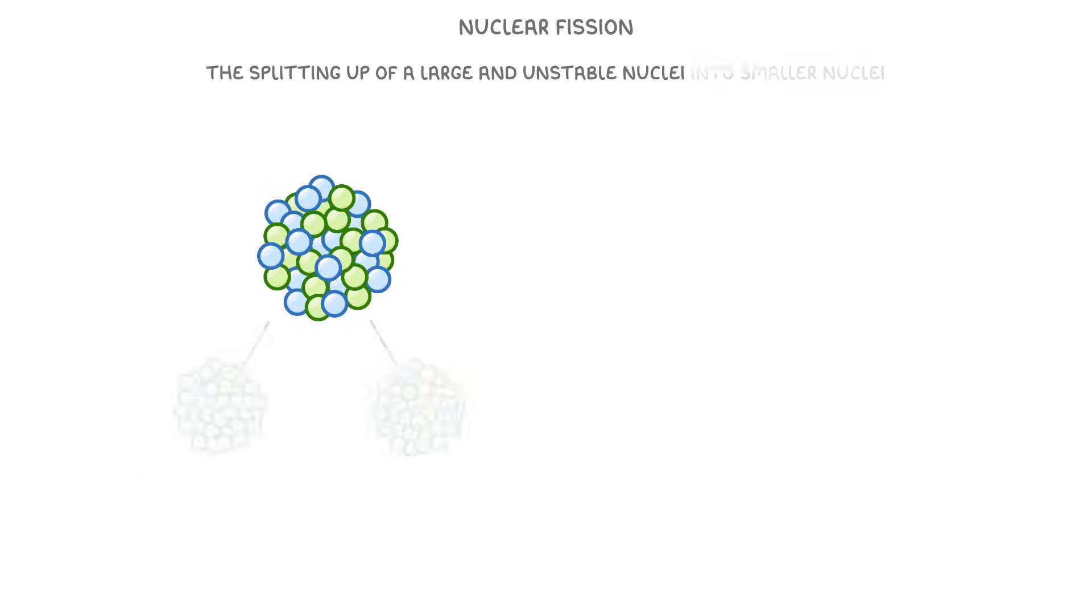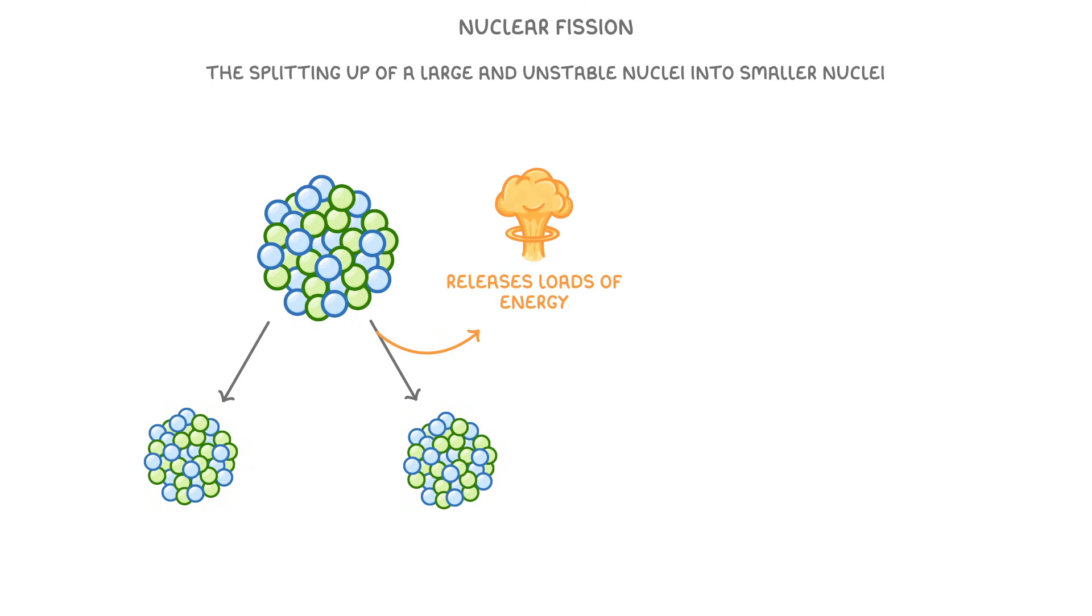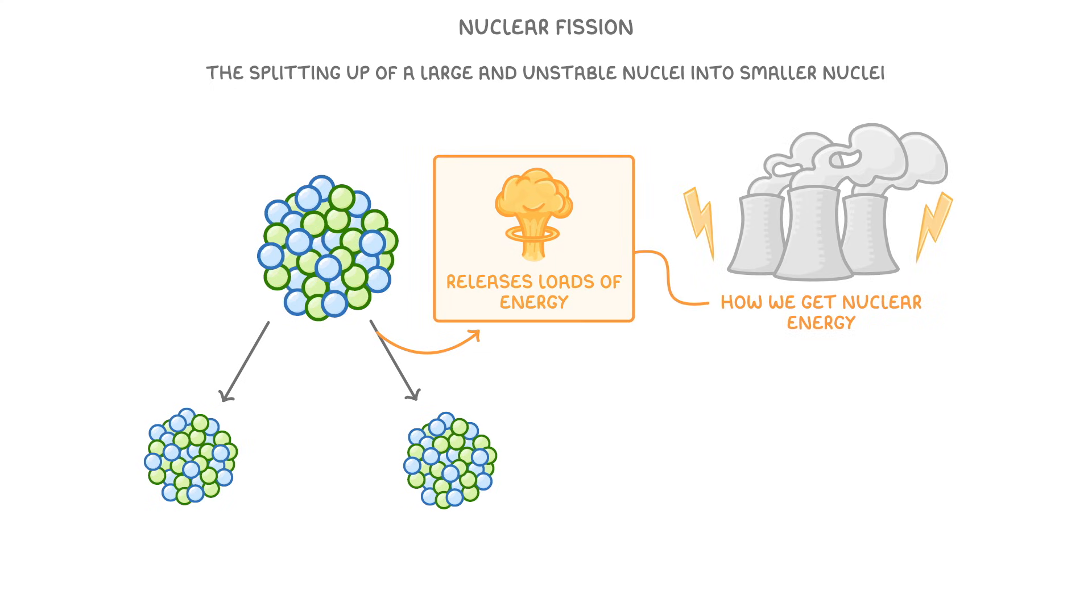In today's video, we're looking at nuclear fission, which is the splitting up of a large and unstable nuclei into smaller nuclei. At the same time, it releases loads of energy, which is how we get all of our nuclear energy here on Earth.